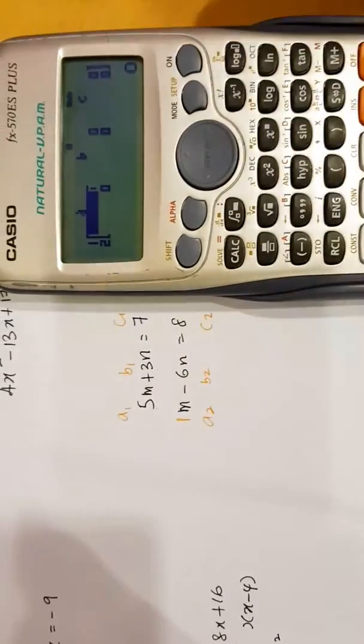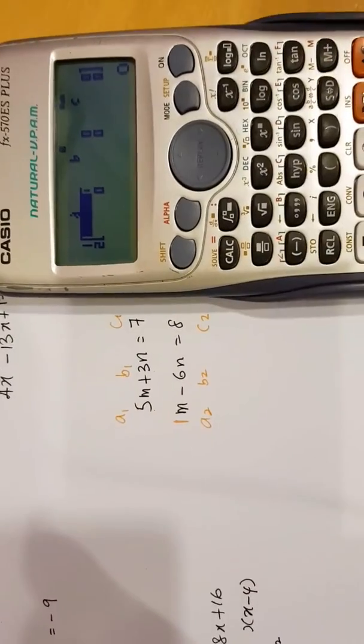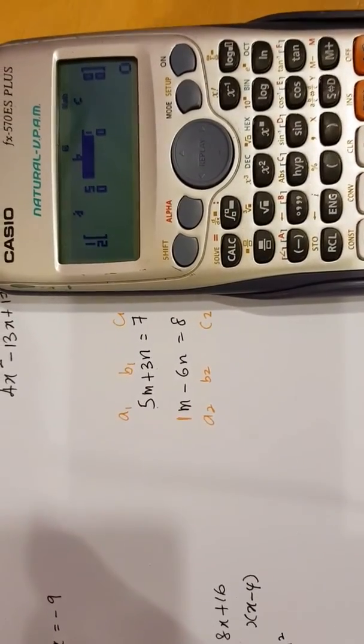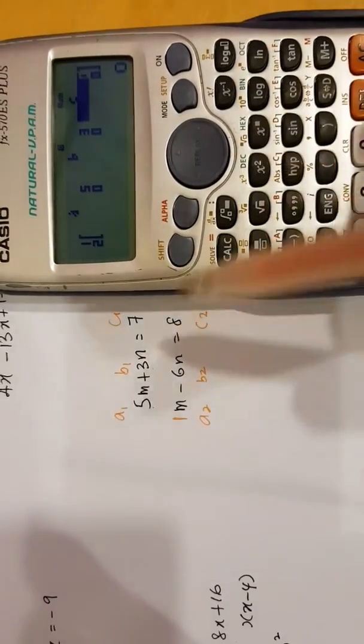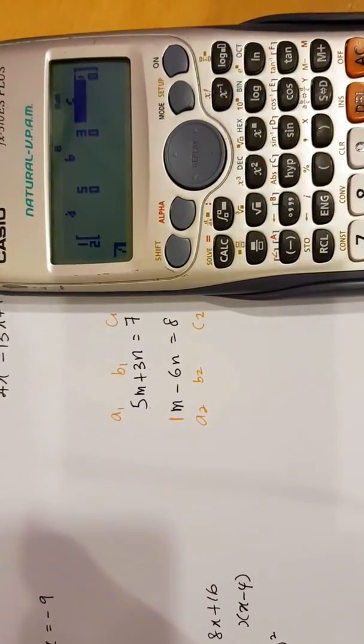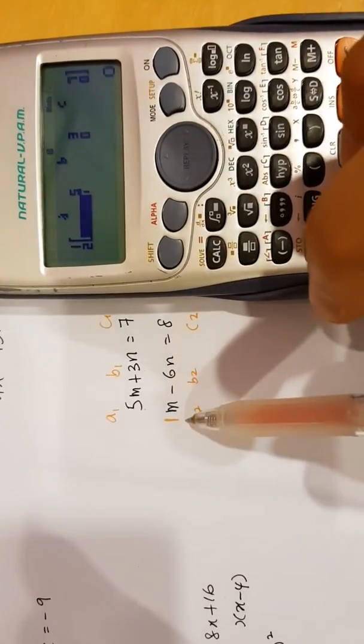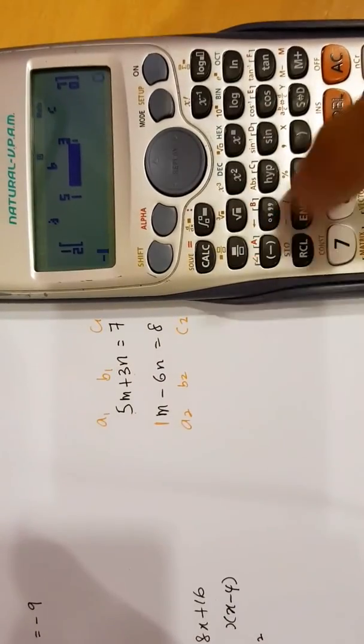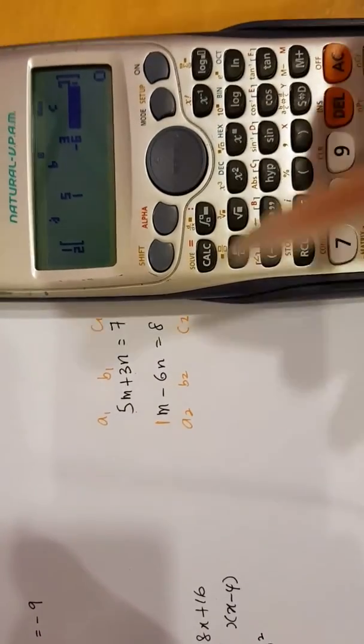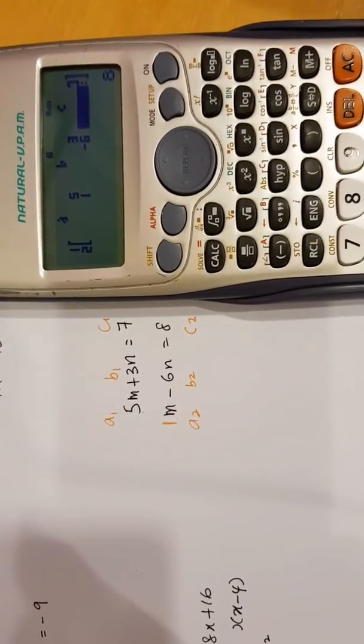Going back to the calculator. A1, the first one, is 5. So, 5, equal. Then, the next one is 3. So, 3, equal. The next one is 7. So, 7, equal. When I do that, notice how it jumps to the second row. For the second row, the first number is 1, equal. We've got negative 6. So, negative 6, equal. We've got 8. So, 8 and equal. I have to press equal one more time.